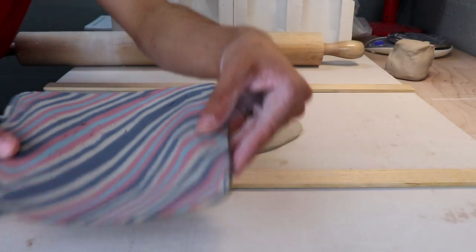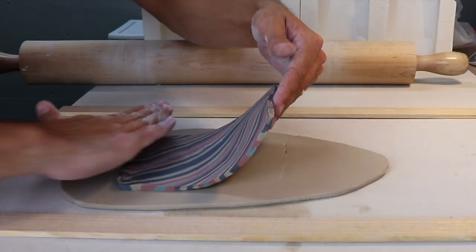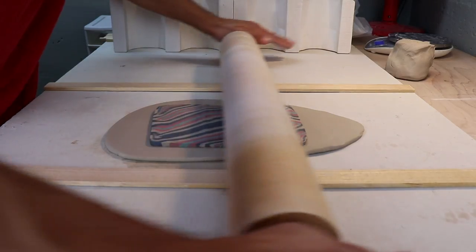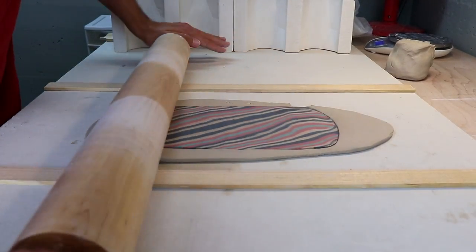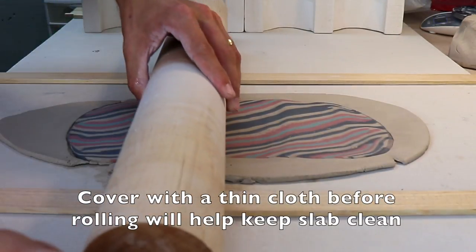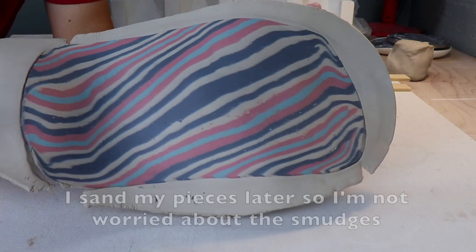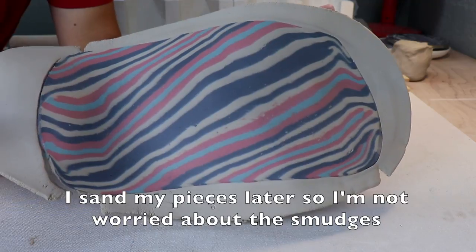Now take my slab and lay it on top and roll out the rest of the way. I roll from the middle forward and from the middle back towards me. That creates the least amount of distortion. Sometimes I'll flip it to easier roll out this part forward. So this slab got much larger by adding it on top of a plain white slab.